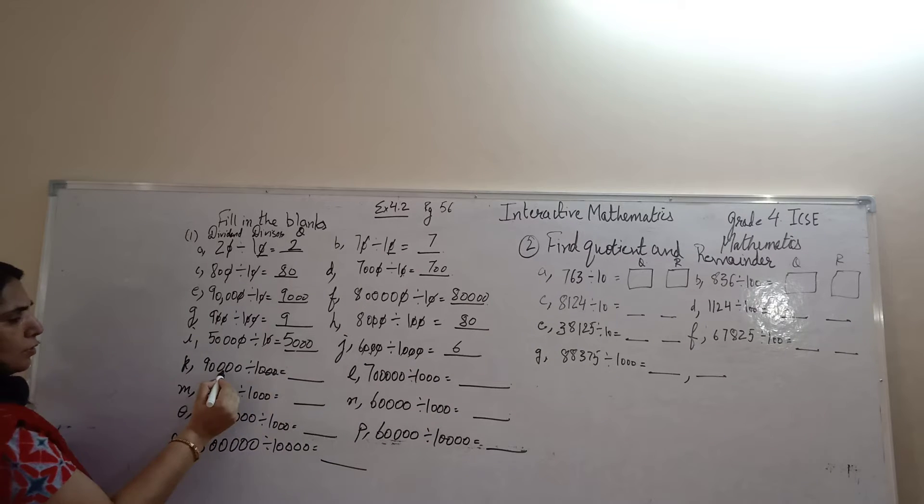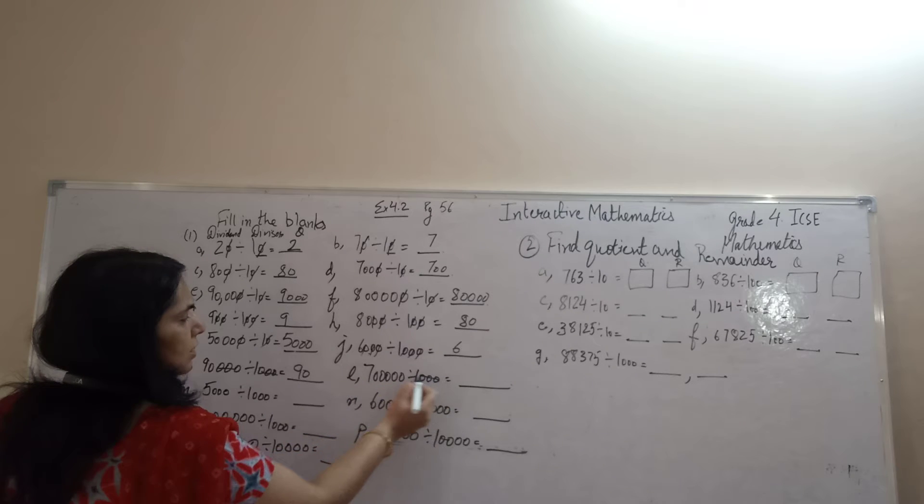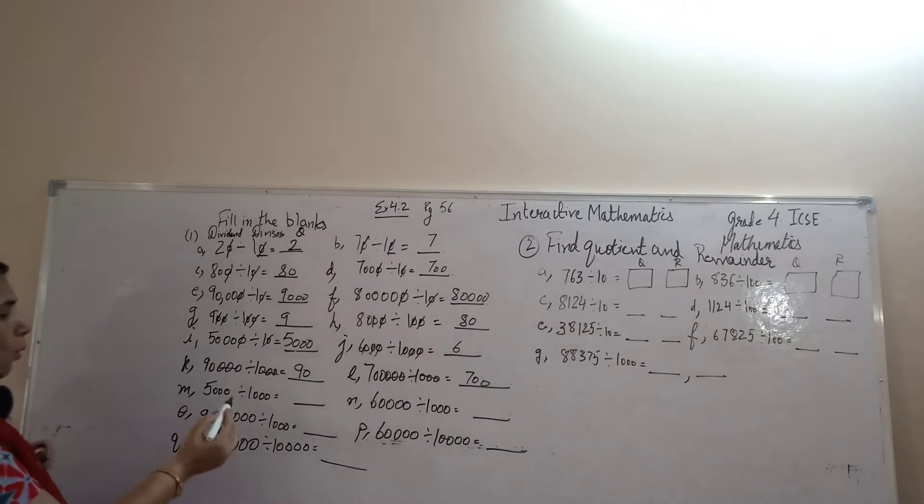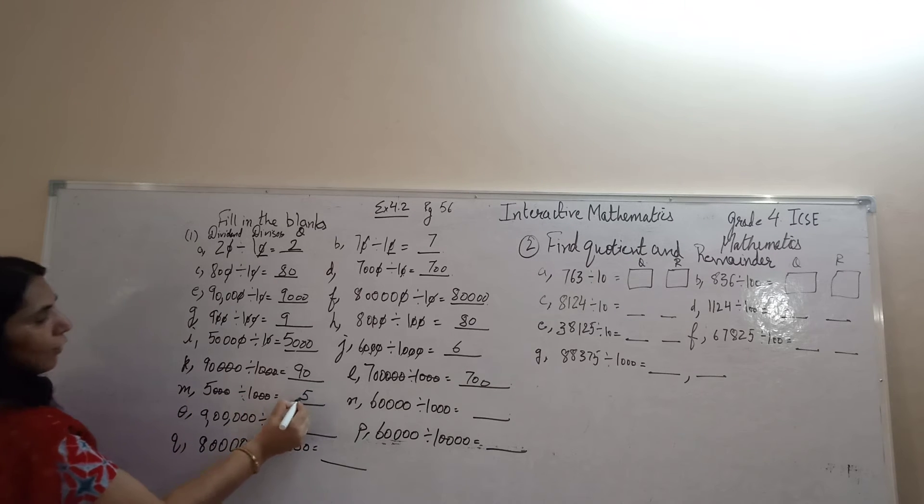3 zeros removed. 90. 3 zeros removed. 700. 5,000 divided by 1000. 3 zeros removed. It is 5.